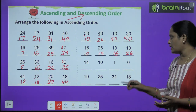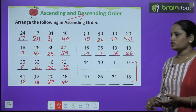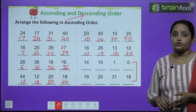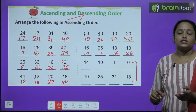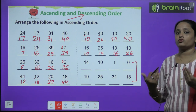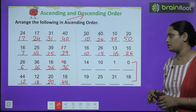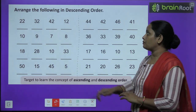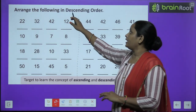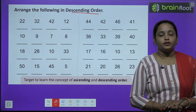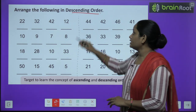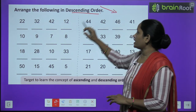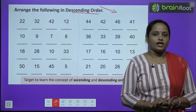So children, I hope aapko samajh mein aa gaya. These two questions aapko khud se karne hain. Try karenge which one is smaller, phir usse bada, phir usse bada, aur phir sabse bada. Ab next exercise mein kya karna hai? Descending order mein likhna hai. Descending mein kya karna hai? Bade se chhote ki taraf jaana hai.